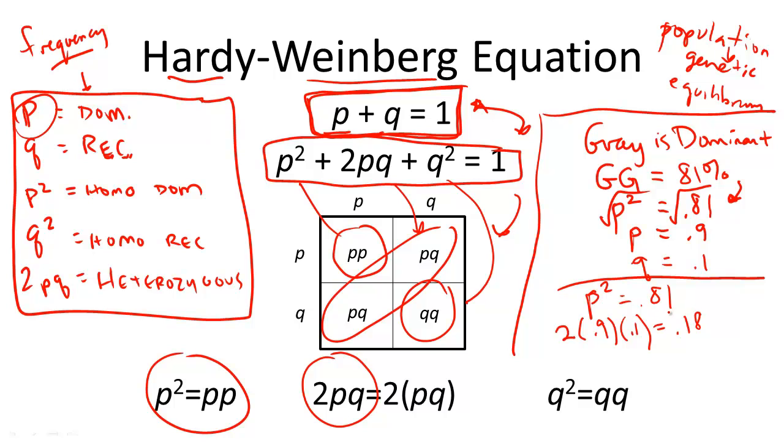So how do we figure out the total allele frequency for gray, for not just the big G, big G, but also for the big G, little g combined? We add them.